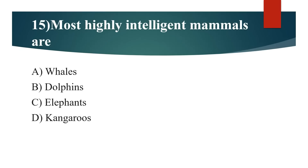15th question: Most highly intelligent mammals are? Option A: Whales. Option B: Dolphins. Option C: Elephants. Option D: Kangaroos. Answer is Option B: Dolphins.